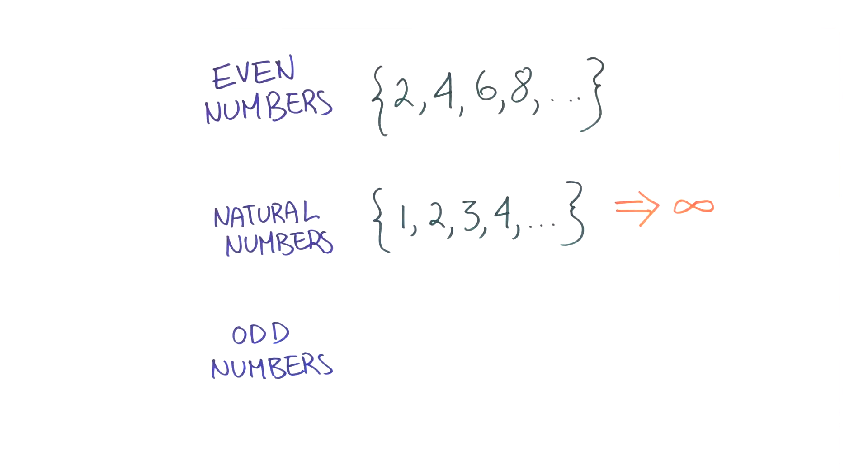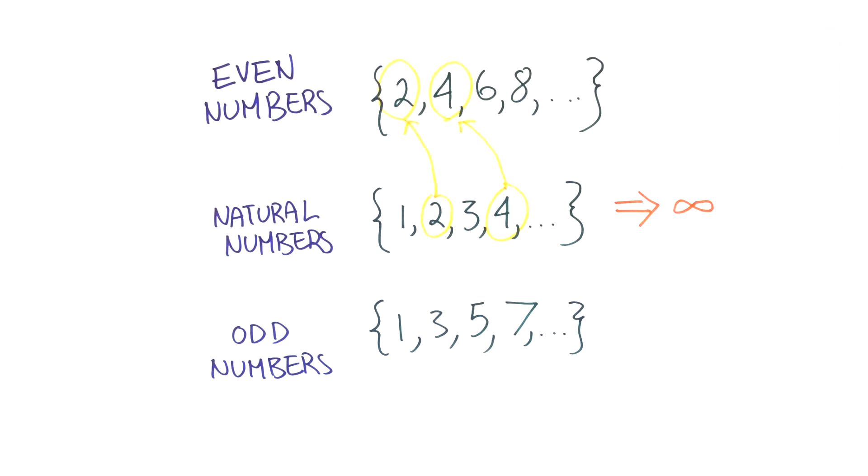Now let's consider the set of even numbers and the set of odd numbers. You might say there are half as many numbers in the even set as the original set since we take every other number.